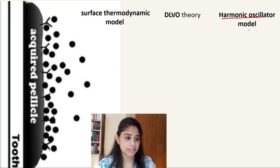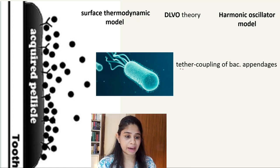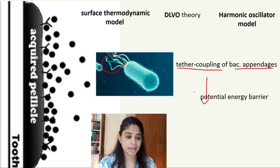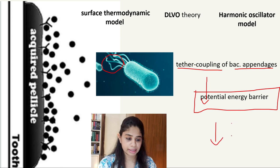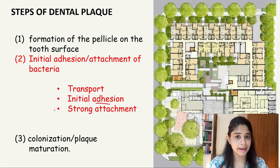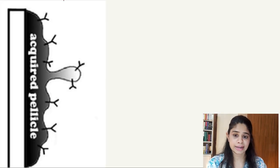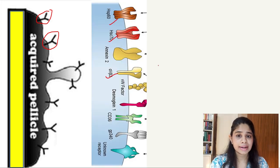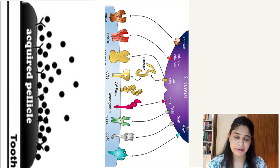The third theory is the harmonic oscillator model, based on energy produced by the tethering coupling of bacterial appendages — flagella and pili. When they move, certain energy is formed, and if this energy pierces the potential energy barrier of the surface, attraction of bacteria onto the surface takes place. Based upon these three theories, bacterial adhesion onto the surface occurs. The next step after reversible adhesion is strong attachment, facilitated by receptors present on the acquired pellicle, which are glycoprotein, protein, or polysaccharide in nature and attach to corresponding adhesins on the organism.